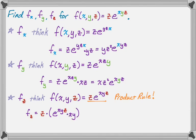And then, that's the first part of the product rule, first derivative of the second. So it's plus second, which is e^(xyz), times the derivative of the first. So the derivative of z with respect to z is 1.